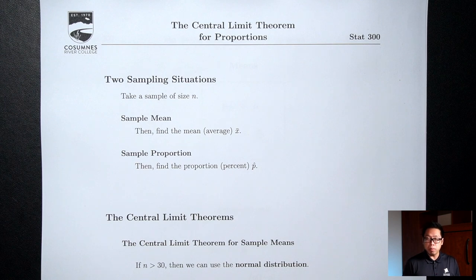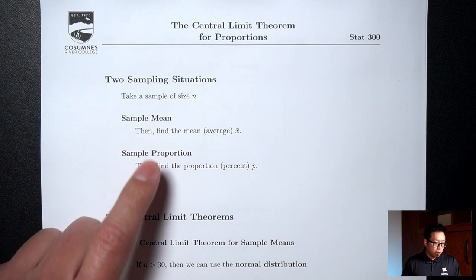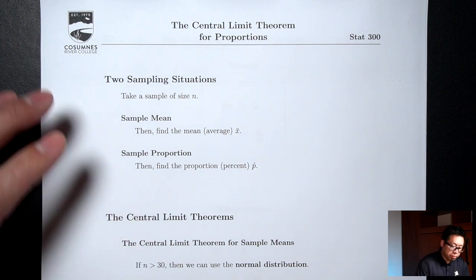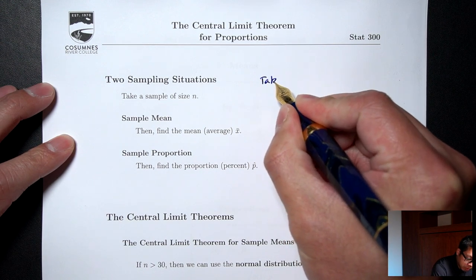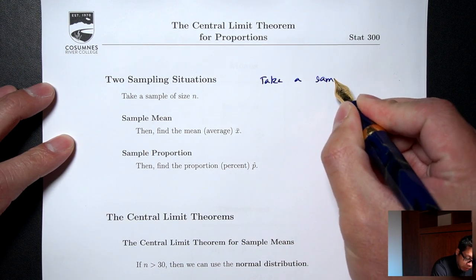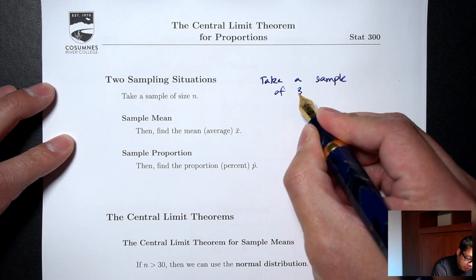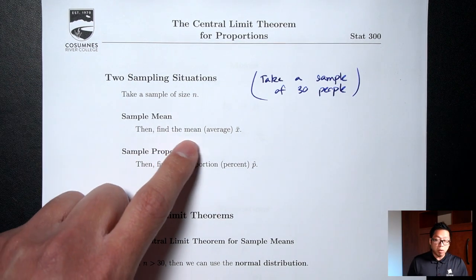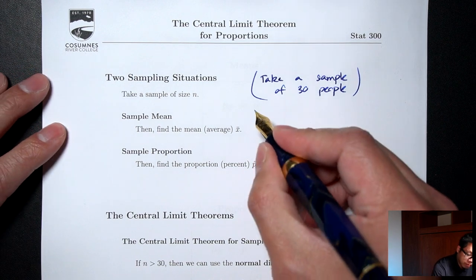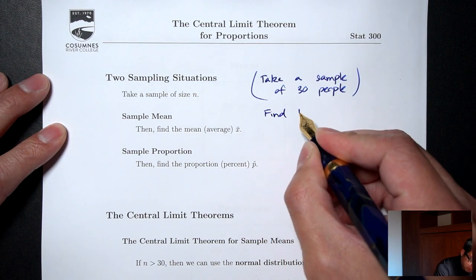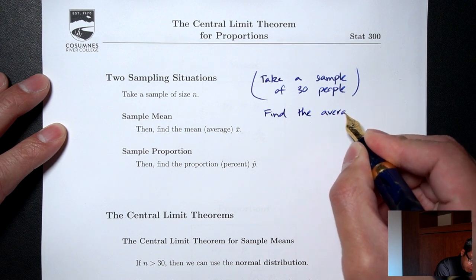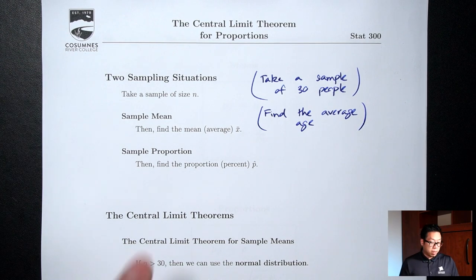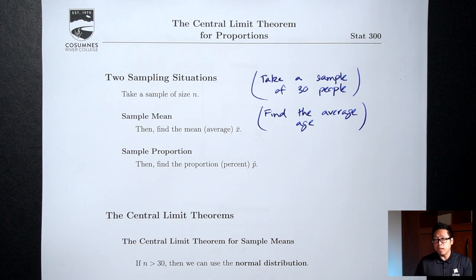There are two main things we can do after we take a sample: we can either find the mean or we can find the proportion. For example, say we take a sample of 30 people. An example of finding the mean or average would be finding the average age. An example of finding a proportion would be finding the percent that likes Netflix.